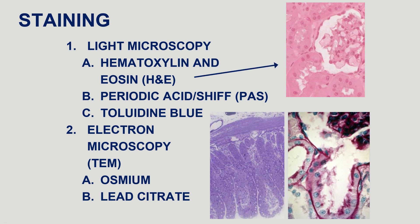The H&E stain stands for hematoxylin and eosin. Hematoxylin is going to stain nucleic acids a blue color — nucleic acids are found in nuclei, so you can visualize all the nuclei within the tissue. Eosin is going to stain proteins red, so more protein-rich places will appear as this kind of pink color. That's what gives you the different shades of pink and purple in an H&E stain.